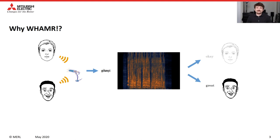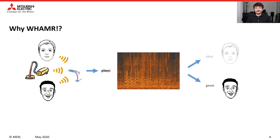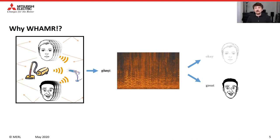So why WHAMR? What is the motivation for our work? In many real-world situations involving overlapping speech, there's more than just the speakers present. For example, there may be noise, or as the audio bounces off the walls, we have reverberation as well. In virtually all prior deep learning-based speech separation studies, only the first case has been considered. Noise and reverberation are likely to degrade the performance of such systems as they rely on the spectral structure of speech, which is degraded by noise and smeared by reverberation.